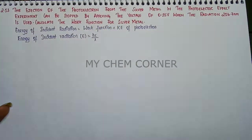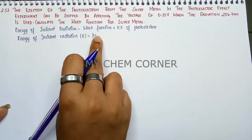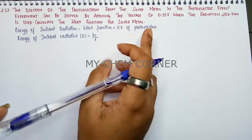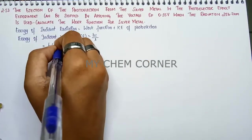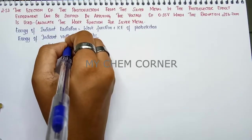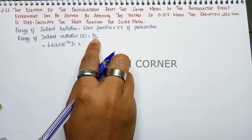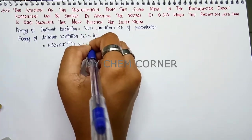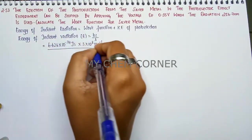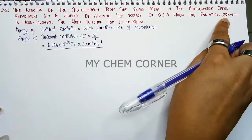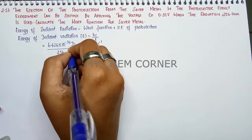E is equal to hc/λ, since wavelength is given. Lambda is given in nanometer and must be converted to meters because the velocity of light is in meters per second. So h is Planck's constant: 6.626 × 10⁻³⁴ joule·second, c is velocity of light: 3 × 10⁸ meter per second, divided by lambda.